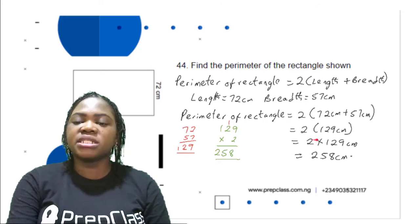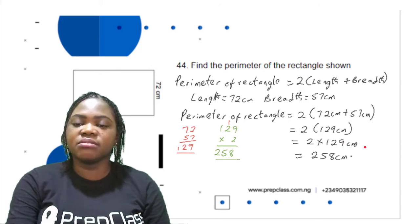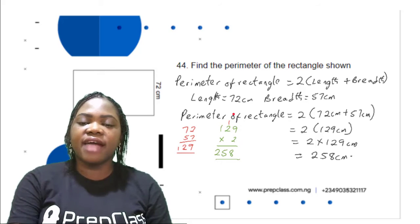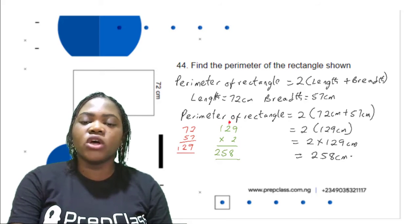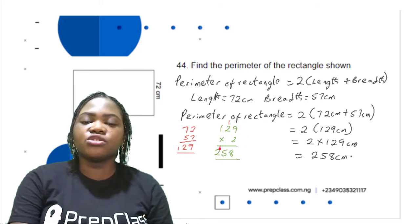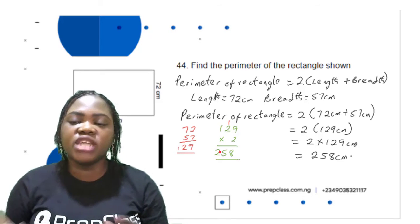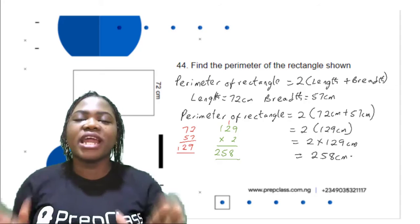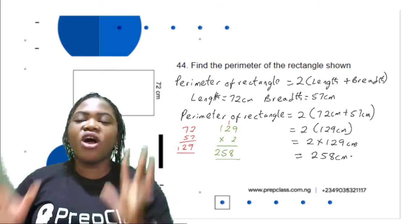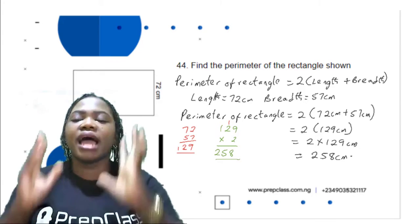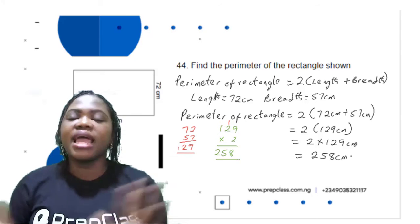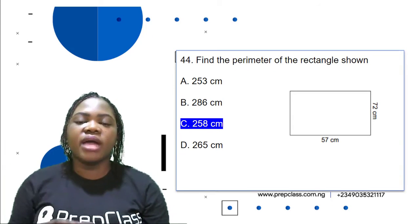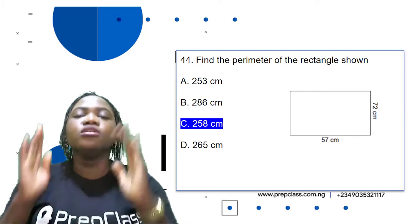Then we multiply by 2: 2 × 109 cm = 258 cm. The perimeter of this rectangle is 258 centimeters. All you have to do is apply the formula 2(l + b) and you will get your answer. The correct option is C: 258 centimeters.